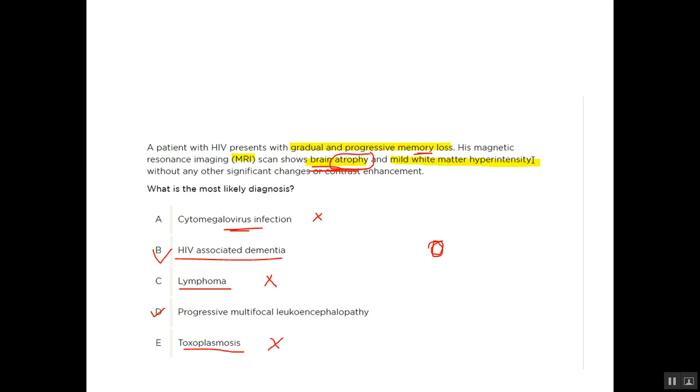So I think this case is HIV-associated dementia because there is atrophy and mild white matter hyperintensity. Dementia is one of the complications of HIV. Thank you, see you soon.